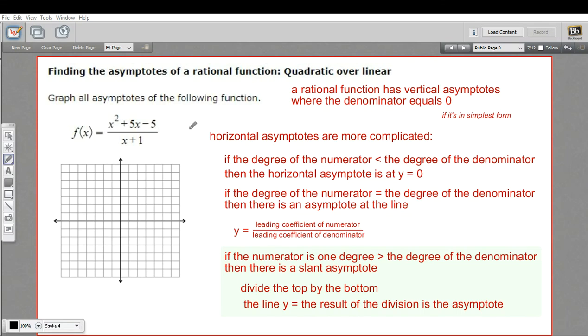In this problem, we're being asked to find the asymptotes of this rational function. We've got a quadratic on the top, a linear on the bottom, so we've got x squared as the leading term here, and an x as the leading term on the bottom.